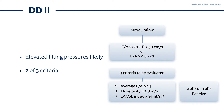We also measure TR velocity. If it is above 2.8 meters per second, it is considered pathological. And we need a left atrium volume index above 34 milliliters per square meter — it is specifically noted that you must measure the indexed volume of the left atrium. If you have these three criteria and two of the three are positive, this is definitely Diastolic Dysfunction Grade 2.